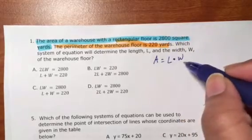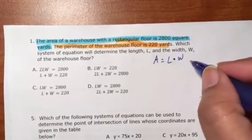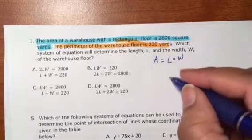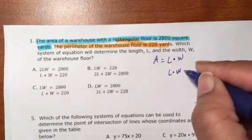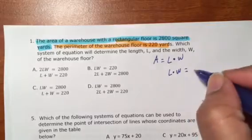Let's take care of the blue first. Your area, it's telling you that your area is 2800, so this one will be length times width is equal to your area.